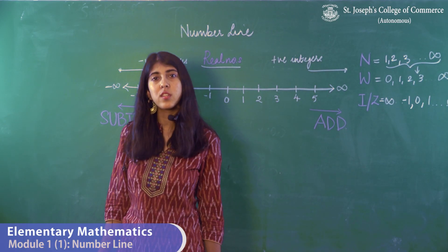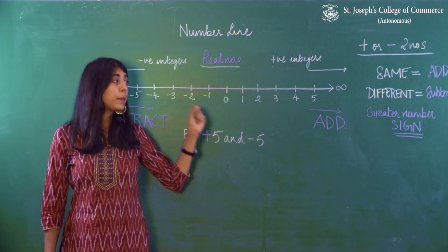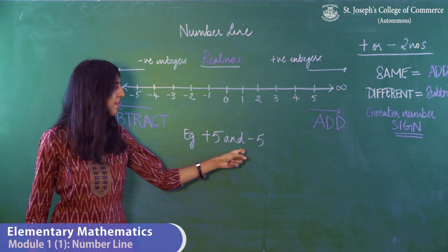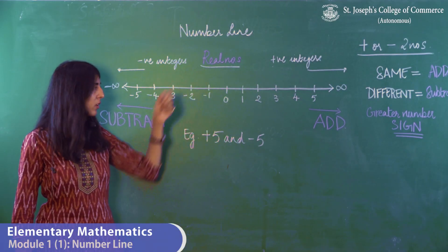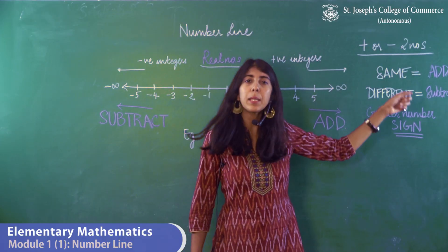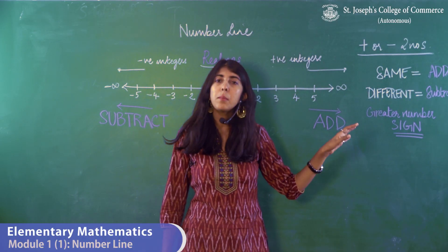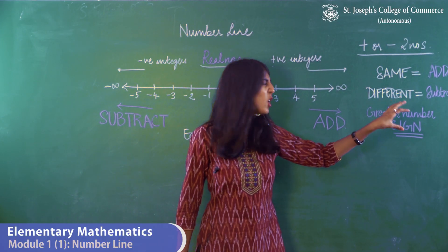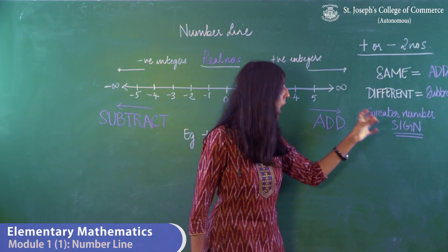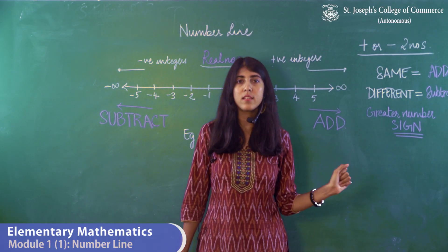Let's move on to understanding the rules required in order to solve the number line. When we need to solve numbers on the number line, two numbers are given — for example, plus 5 and minus 5. The first rule is that if both the numbers have the same sign, you must add. If both the numbers have opposite or different signs, you need to subtract. Once you subtract or add, the answer takes the sign of the greater number.